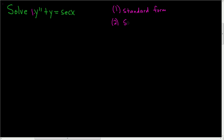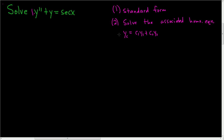Step 2: we want to solve the associated homogeneous equation. You take the left-hand side of your differential equation and set it equal to 0, and you end up with the solution y_c equals c1·y1 plus c2·y2. This is the solution to the associated homogeneous equation.